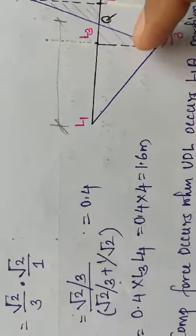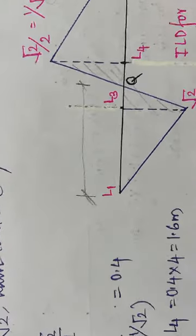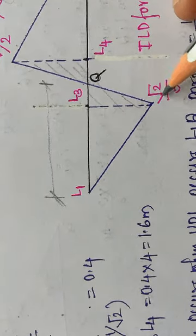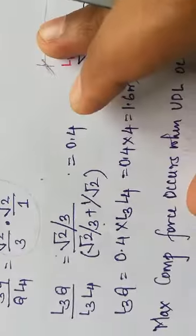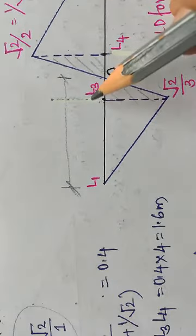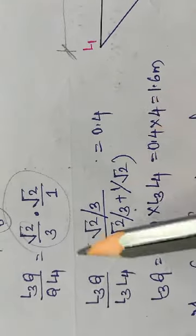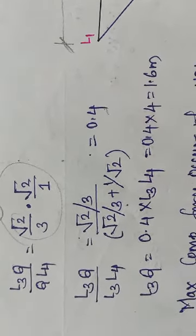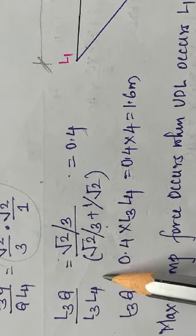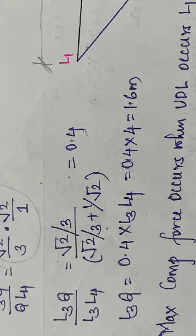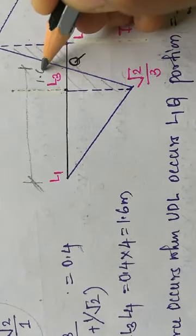From the similar triangle relation, L3Q / QL4 = (√2) / (1/√2), so after substituting L3Q = 0.4 × L3L4. Each panel length is 4 meters, so L3Q = 0.4 × 4 = 1.6 meters. Therefore QL4 = 4 − 1.6 = 2.4 meters.